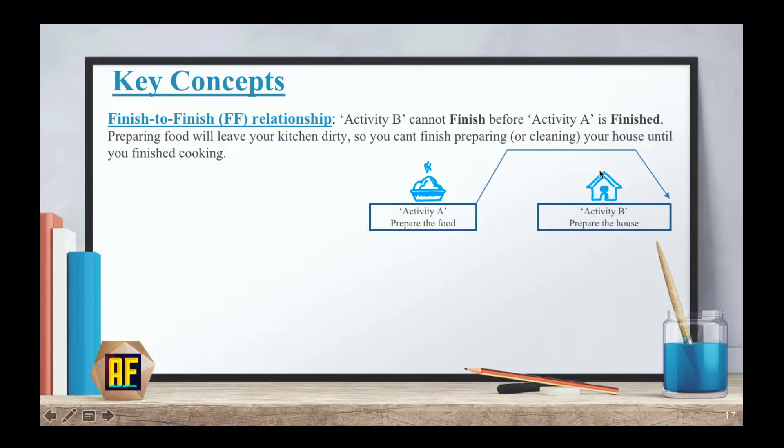Finish to finish relationship. Activity B cannot finish before activity A is finished. Preparing the food will leave your kitchen dirty, so you can't finish preparing or cleaning your house until you actually finished cooking. I know it kind of makes sense and these are simple examples, but when you have a big construction project with a lot of subcontractors working on site, you need to see which one comes before the other and which one can overlap without having issues.